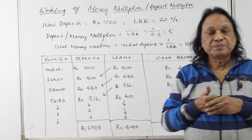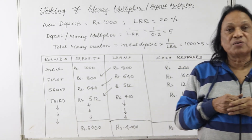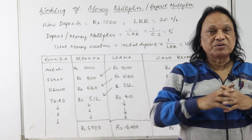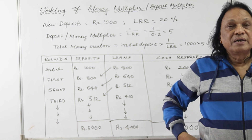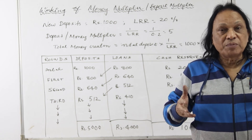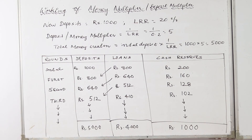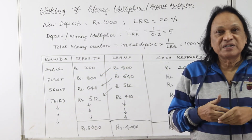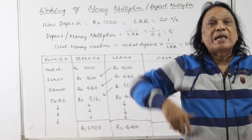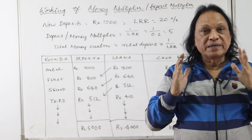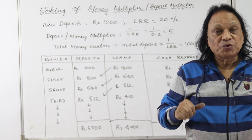One key assumption: whatever money goes outside the bank will come back to the bank. The deposit multiplier or money multiplier equals 1 / LRR. The total money creation by the commercial bank equals initial deposit × (1 / LRR). If LRR is 20%, the deposit multiplier will be 5.